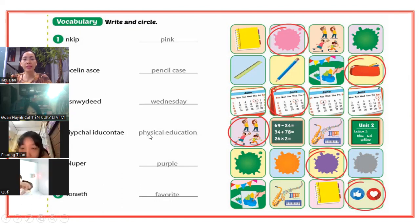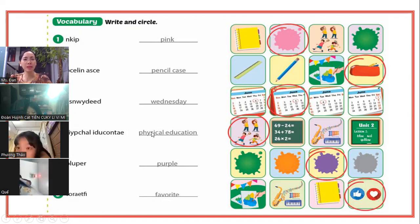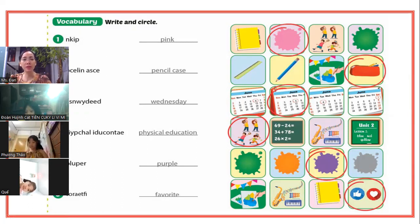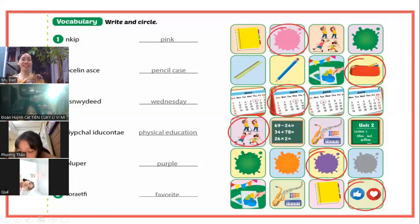Physical Education - môn thể dục. Các bạn nào chưa nhớ từ này không? Người ta không viết PE, viết tắt cho mình, mà người ta viết physical education đầy đủ, bắt các bạn phải sắp xếp lại. Cho nên các bạn phải cố gắng luyện đọc nhiều và viết nhiều cho thuộc nha. Rồi, khoanh tròn physical education - môn thể dục vào.